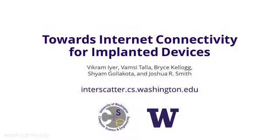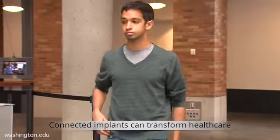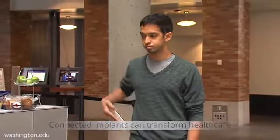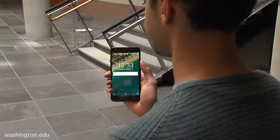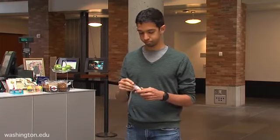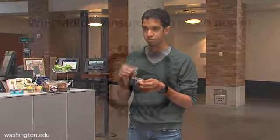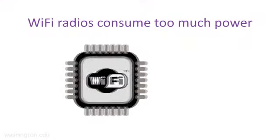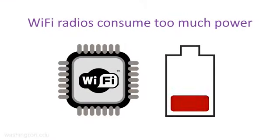We introduce InterScatter, which for the first time enables implanted devices to talk Wi-Fi. Smart contact lenses or brain-machine interfaces that talk to your phone would transform how we manage chronic diseases. For example, a contact lens could monitor a diabetic's blood sugar level and provide early warnings. The key challenge is that Wi-Fi radios consume significant amounts of power and are infeasible on implanted devices. We introduce InterScatter to address this problem.